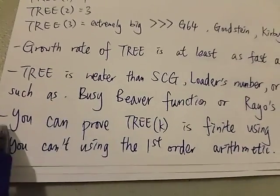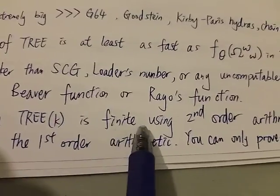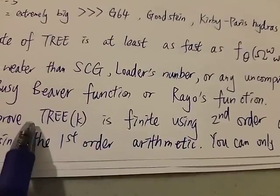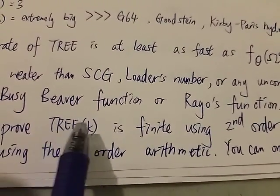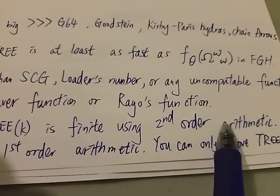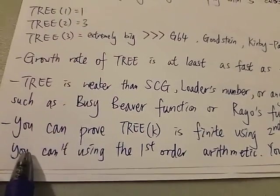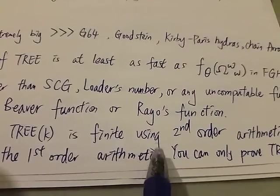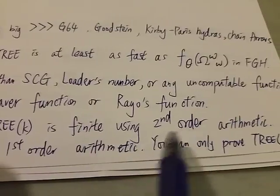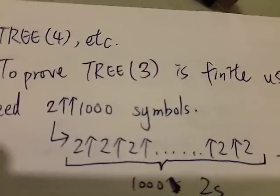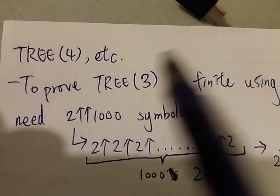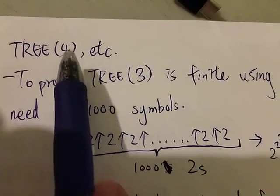You can actually prove TREE(k) is finite using the second order of arithmetic. So for any k, you can prove any k for TREE(k), you can prove that it is finite using the second order of arithmetic. However, you cannot use the first order of arithmetic to prove all k is finite. You can only prove TREE(3) or TREE(4) is finite using the first order. So you can only prove specific numbers of k, not any k.